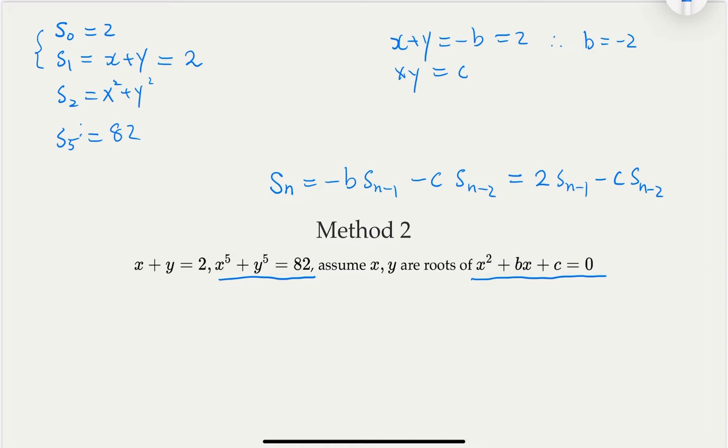So we know s_0 and s_1 is given because x plus y is given as 2. s_0 is also 2. So we can calculate s_2 by using the recurrence relationship. So here we equal 2 times s_1 minus c times s_0. s_1 is 2, so it's 4 minus s_0 is 2, so it's 2c.